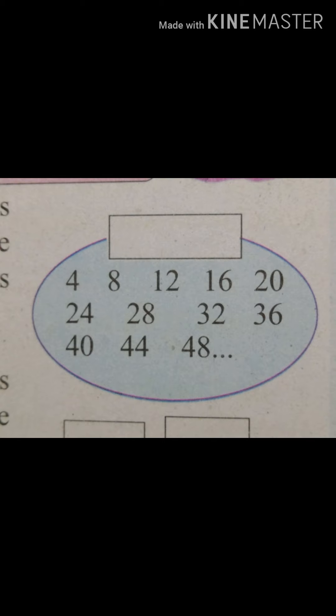4 times 1 is 4, 4 times 2 is 8, 4 times 3 is 12, 4 times 4 is 16. Right? These are multiples of 4. When you say multiples of 5, can you list the multiples of 5? Yes.